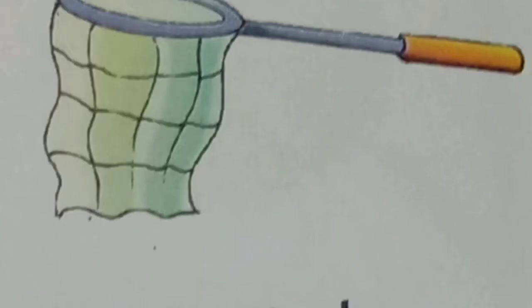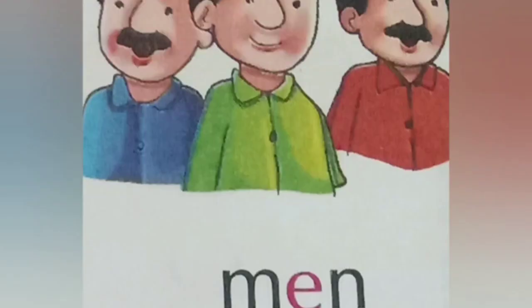Bell. Next is den — D-E-N — den means guffa. Next is net — N-E-T — net means jar. Next is men — M-E-N — men means aadmi, jahan bahut saare aadmi hote hain, hum men bolte hain.